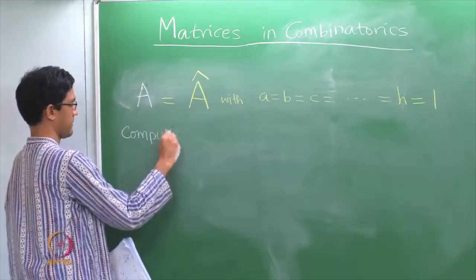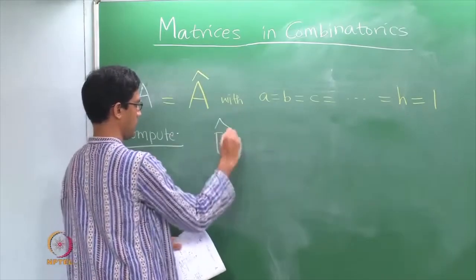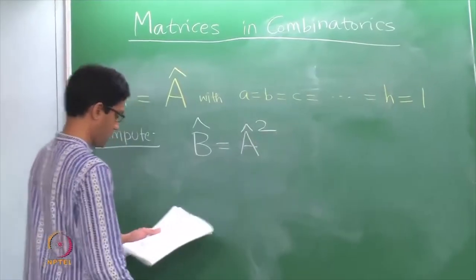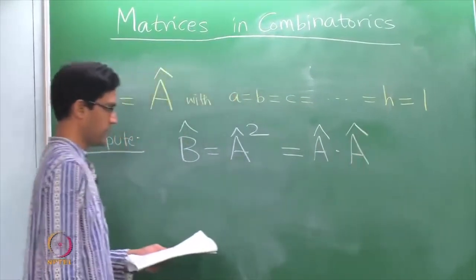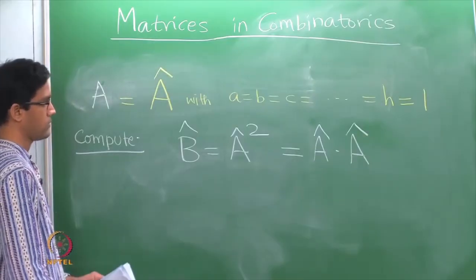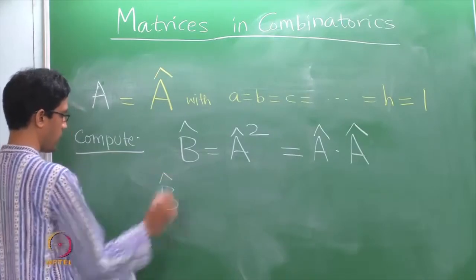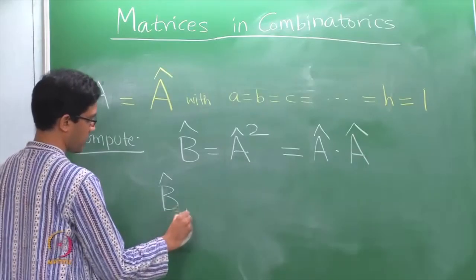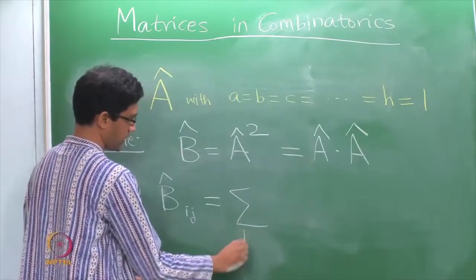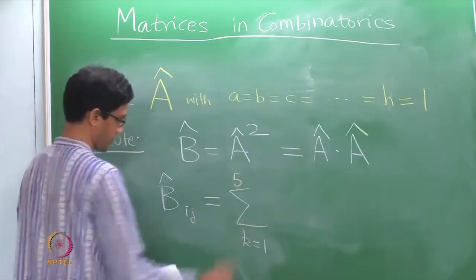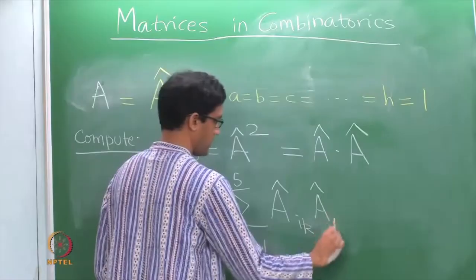This labeled adjacency matrix has the following nice property. Let us compute the square of this matrix. Let me call it B-hat, which is A-hat squared — that is, A-hat times A-hat. Multiplying this matrix with itself means going back to the definition of matrix multiplication. If I want to find the (i,j)-th entry of B-hat, it is given by the sum over k from 1 to 5 of A-hat(i,k) times A-hat(k,j).